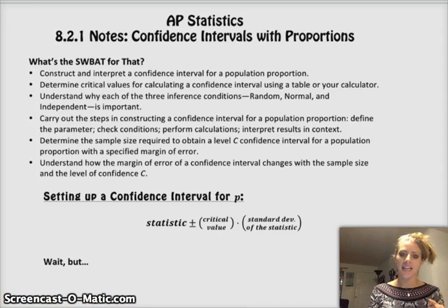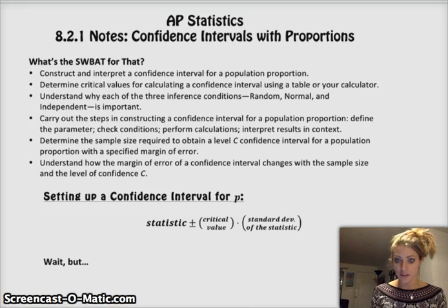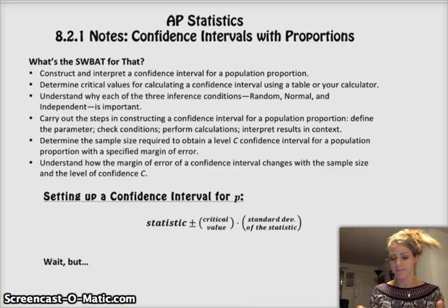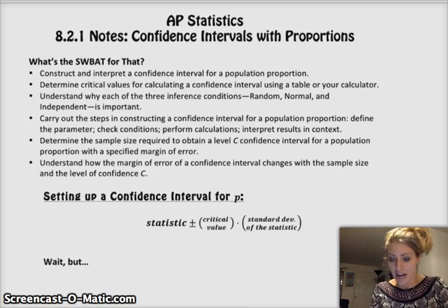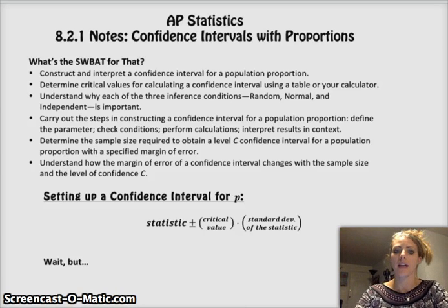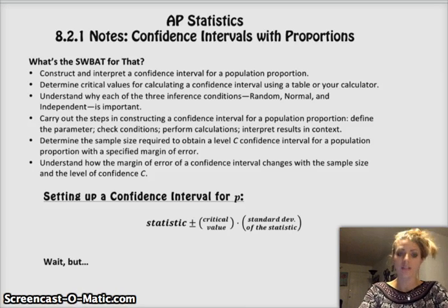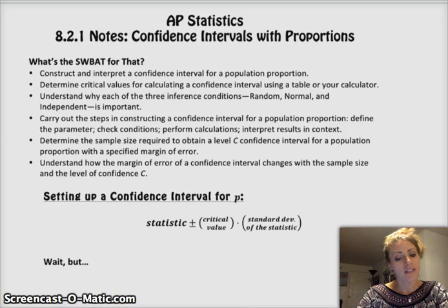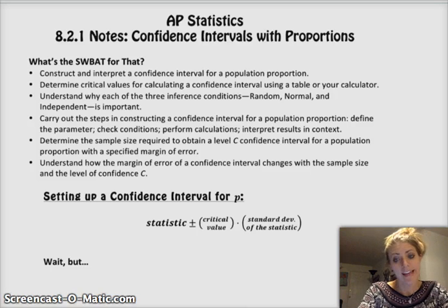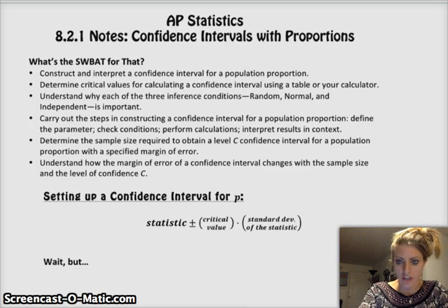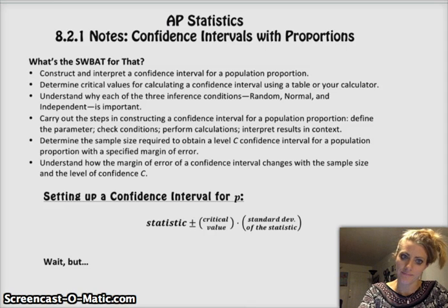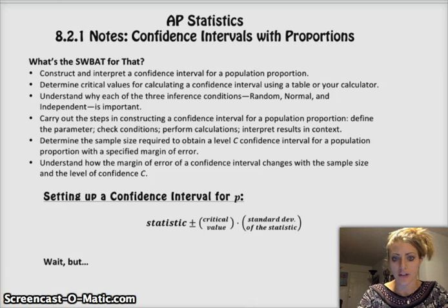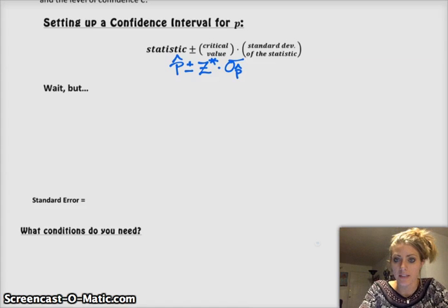So number one, setting up a confidence interval for P. Any confidence interval is going to have this form: the statistic plus or minus the critical value times the standard deviation of the statistic. In our case, we're doing it for proportions, categorical data, percents, that kind of situation.